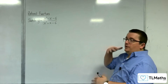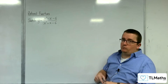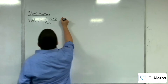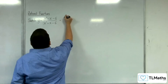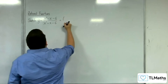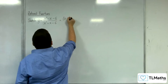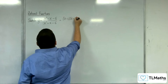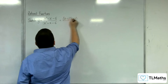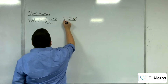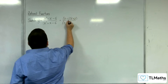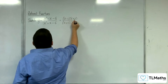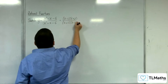First thing to identify: can you factorise the numerator and denominator? In this case, we're going to have (x − 3)(x + 2) in the numerator, and in the denominator we would have (x + 3)(x − 2).